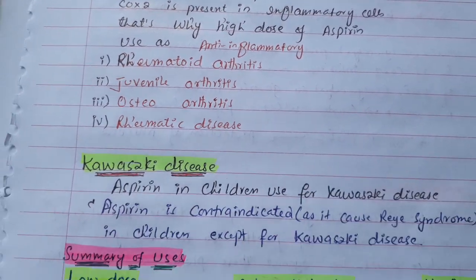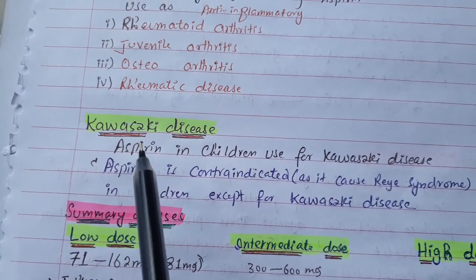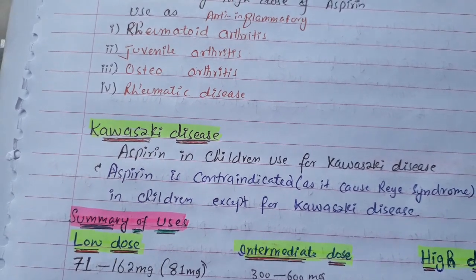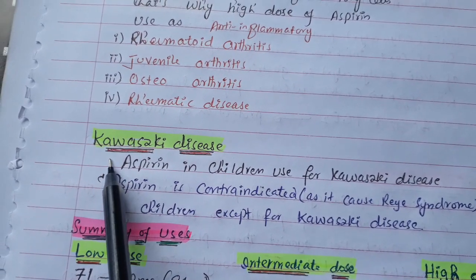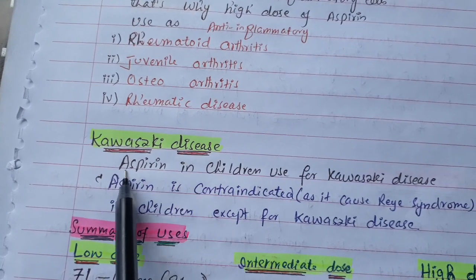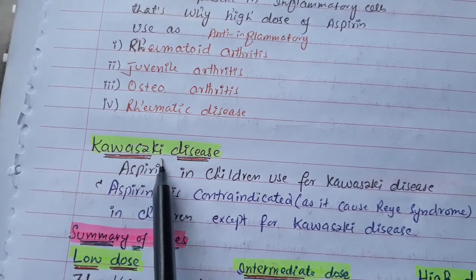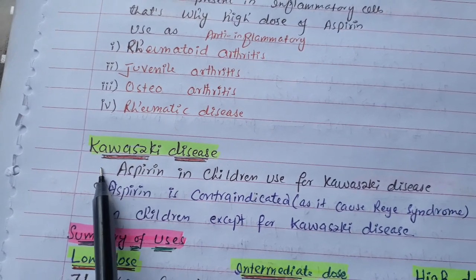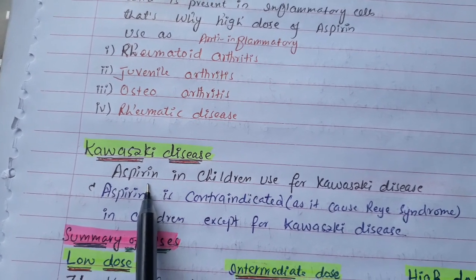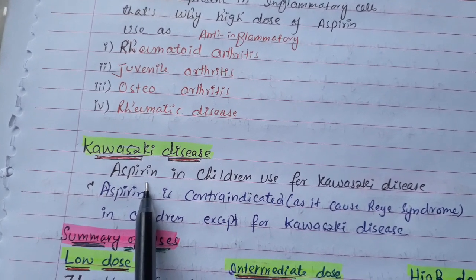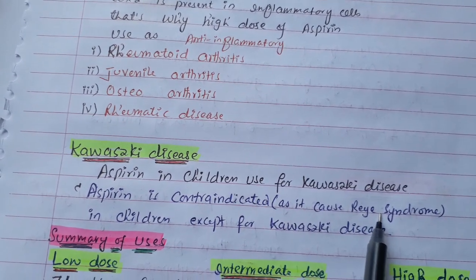Aspirin is contraindicated in children, except in one condition: Kawasaki disease. If a child has Kawasaki disease, we can prescribe aspirin. Otherwise, aspirin is contraindicated in children because it can cause Reye's syndrome.